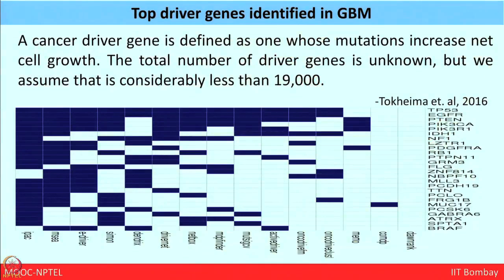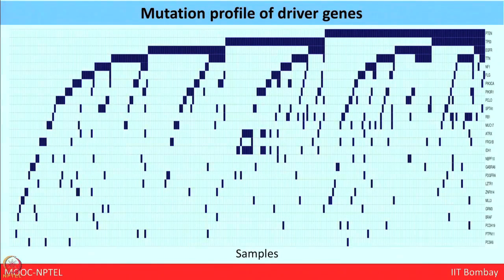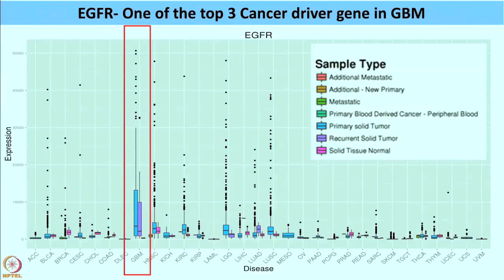A cancer driver gene is defined as one whose mutation increases net cell growth. The total number of driver genes is unknown, but is assumed to be considerably less than 19,000, as given by Tokeima et al. in 2016. From the driver DB repository, the top driver genes include TP53, EGFR, and PTEN, and their role in glioblastoma tumorigenesis is well known. The mutation profiles of these driver genes can be seen in terms of samples, and if we choose EGFR as one of the top three, we can understand its expression in glioblastoma.